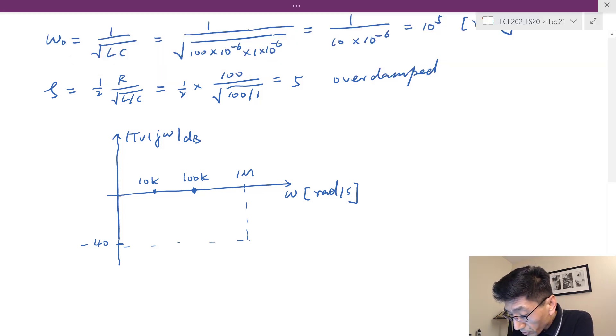At low frequency, lower than the resonant frequency, we're going to use the zero dB line. And we're going to have -40 dB per decade slope at higher frequency. This one has a -40 dB per decade.